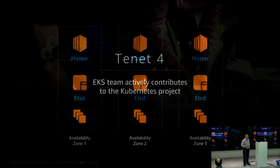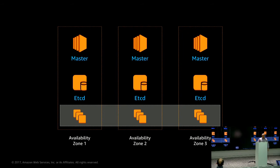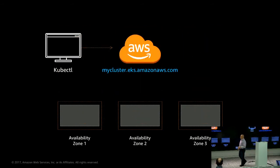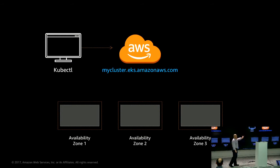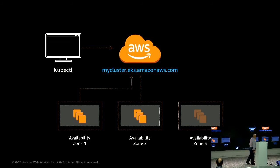Going back to the architecture picture: the master and etcd — the upper part — is what we remove from you with EKS. Your responsibility will be just the lower part: your actual worker nodes. Instead of three separate masters and three separate etcd instances to manage, you just have a URL or endpoint that you point your kubectl to. With that, you deploy your worker node instances that will run your pods or containers on Kubernetes, and of course you use autoscaling for that.